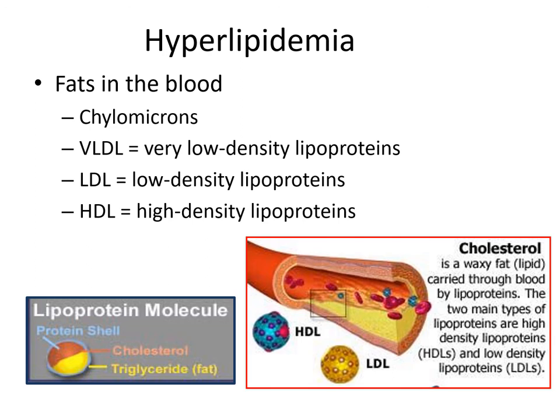The LDLs, or low-density lipoproteins, have a low amount of protein and a higher concentration of fats. The HDLs, the high-density lipoproteins, have a lot of protein and very little fat or triglycerides. So they are all fats within the bloodstream, but we categorize them by the amount of fat they have compared to the lipoproteins present.